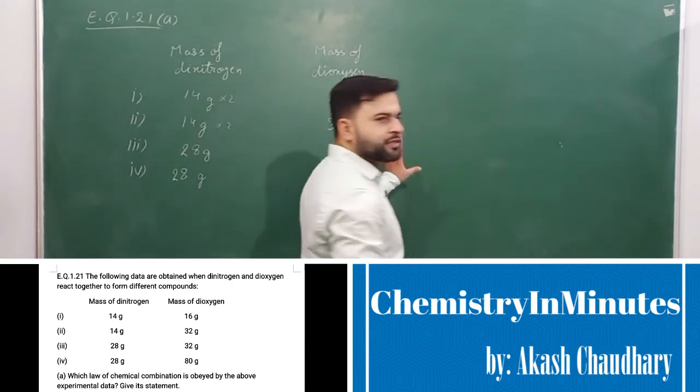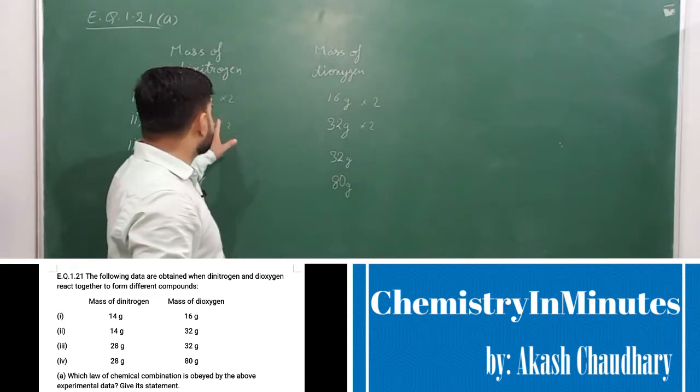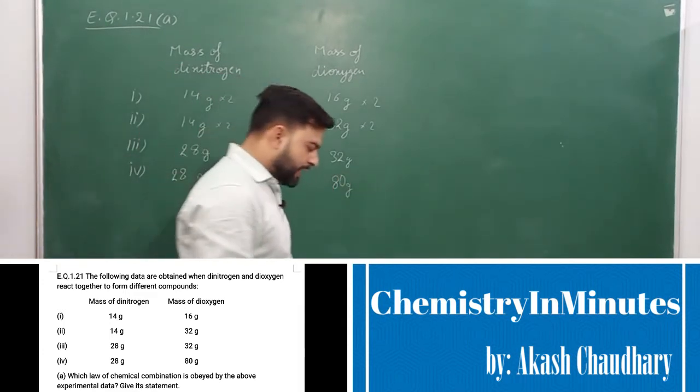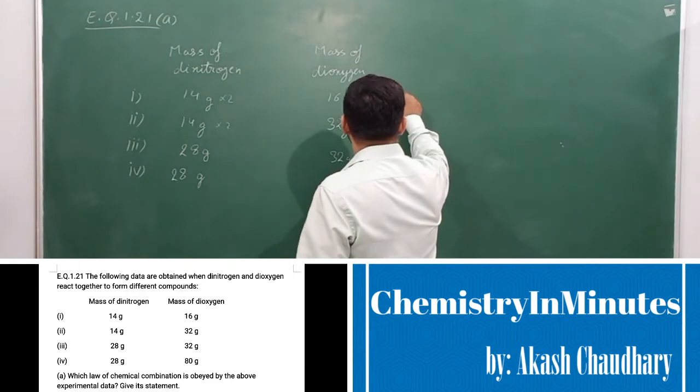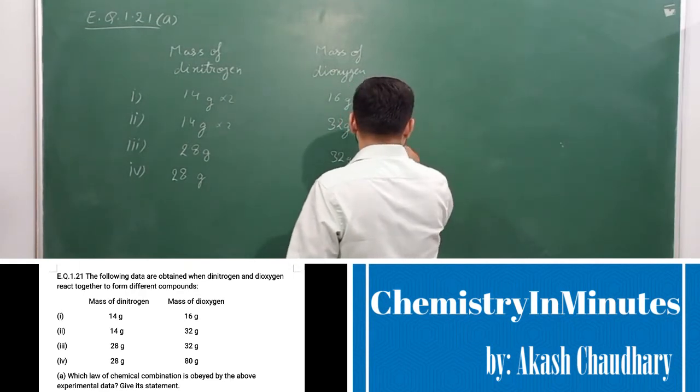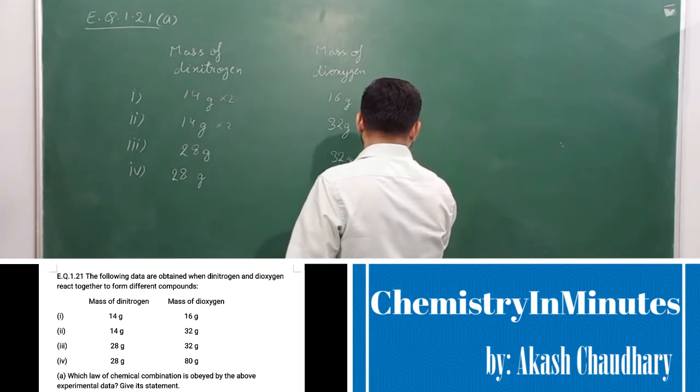So, the mass of dioxygen reacting with fixed mass of nitrogen will be 32, 64, 32 and 80.